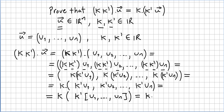So we have k outside, and then k' times (u1, u2, ..., un). But (u1, u2, ..., un) is simply vector u, so I can write k times (k' times vector u). This concludes the proof, because we have shown that (k times k') times vector u equals k times (k' times vector u), as we were asked to prove.